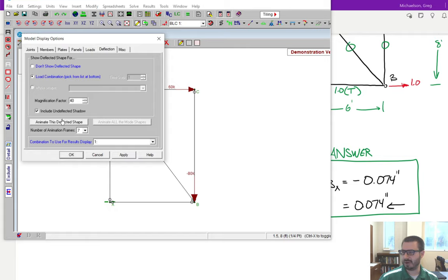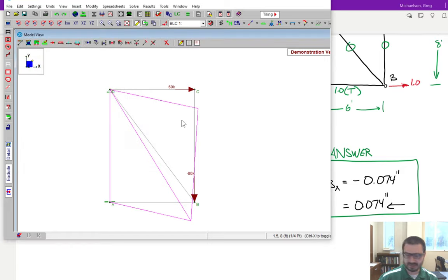So if I show this deflected shape, and we'll include the undeflected shadow and hit apply, you can see here's what the truss looks like before and after deflection. It's been magnified so that we can actually see it because it's only 0.07 inches, so it's blown it up quite a bit. But if you look at joint B, this is joint B before and after, and you can actually see it moves to the left. So you can actually see that deflection in the x direction, and it's deflecting left the way that our analysis indicated.